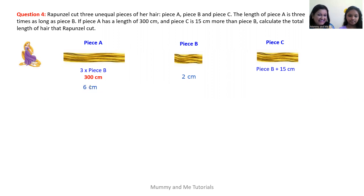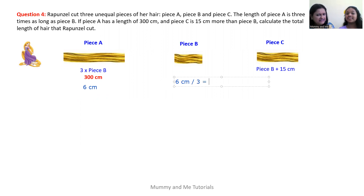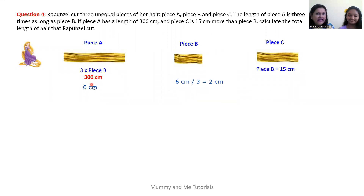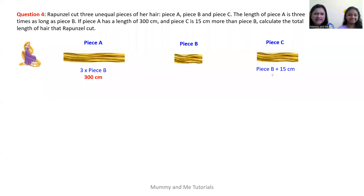Now what if we know that piece A is six centimeters and we want to calculate the length of piece B, knowing that piece A is three times the length of piece B? Then piece B would be six centimeters divided by three, because division is the opposite rule of multiplication. So piece A divided by three gives us two centimeters, which is the length of piece B.